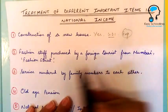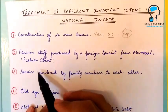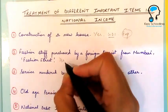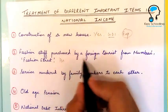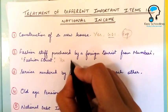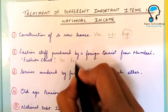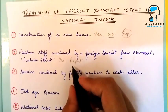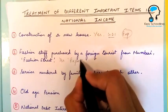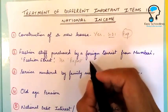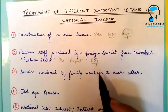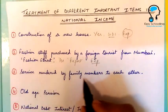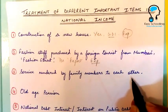Next is fashion stuff purchased by a foreign tourist from Mumbai Fashion Street. Yes, purchases by a foreign tourist will be considered an export, and this will again be included in the expenditure method.